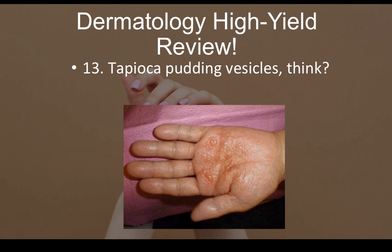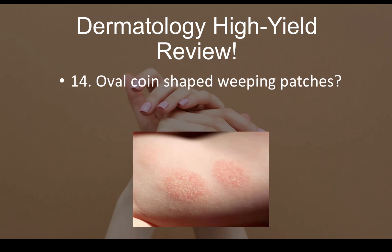Question number thirteen: tapioca pudding vesicles should make you think of dyshidrotic dermatitis. You can see a picture of it here. If you see 'tapioca pudding vesicles' anywhere in the stem, that should instantly make you think of dyshidrotic dermatitis.